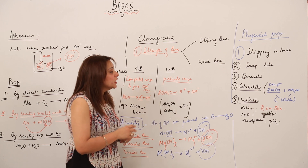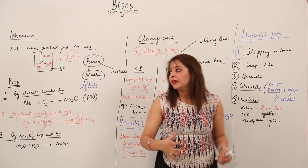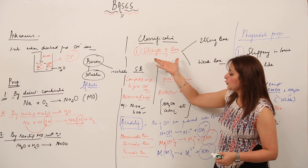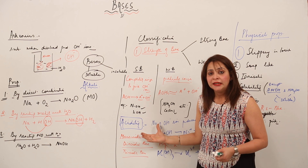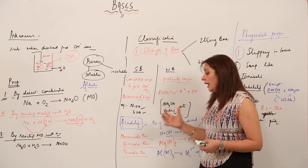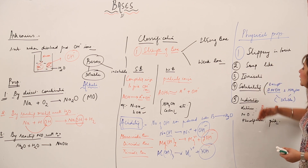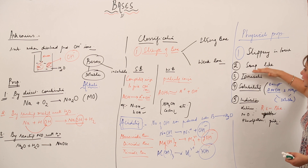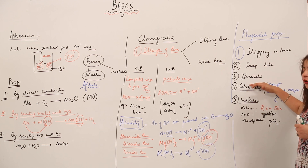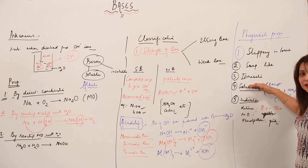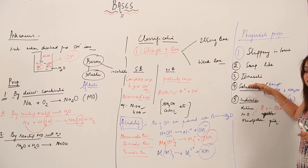Phenolphthalein, which is originally colorless, turns pink when a base is added to it. So this is the effect of base on indicators. To summarize: bases are slippery and soap-like; they ionize when dissolved but the degree of ionization depends on strength — strong bases ionize more, weak bases ionize less.